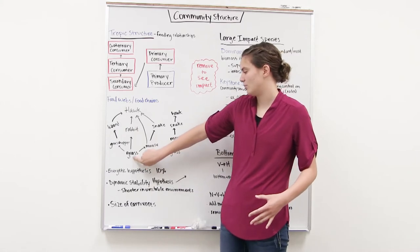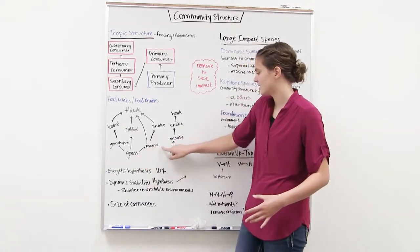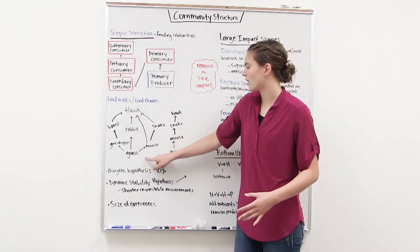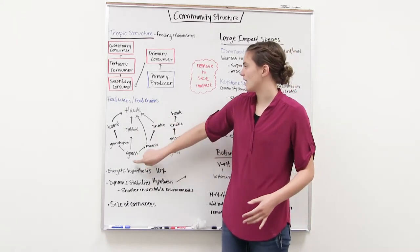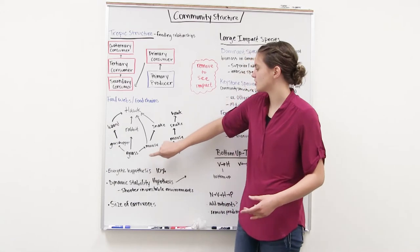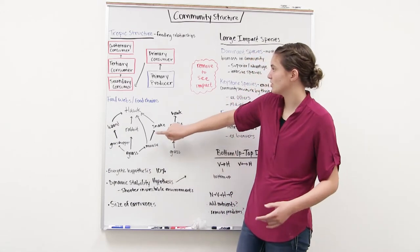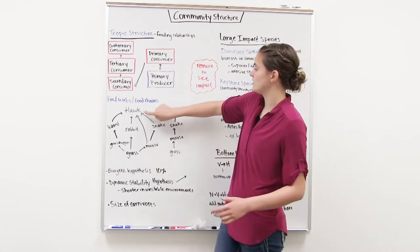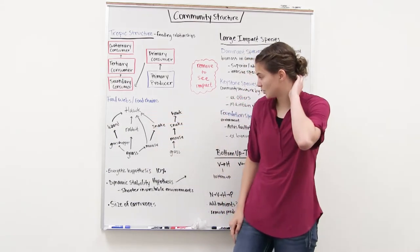If we're looking at an individual food chain within this web, we'd go grass to mouse to snake to hawk — looking at our primary producer, primary consumer, secondary consumer, and tertiary consumer.